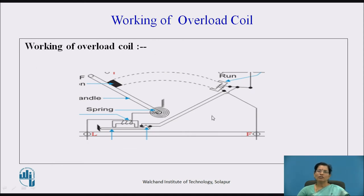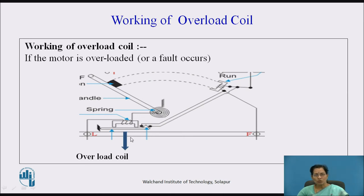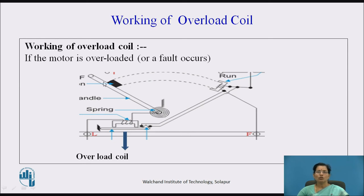Let us see about the working of the overload coil. If the motor is overloaded or a fault occurs, very large current flows through the motor and through the overload coil. Then the overload coil creates a magnetic field for that current. When the arm lifts up, due to the triangular portion, the no-volt coil demagnetizes and the handle goes to the off position. So the overload coil protects the motor from overload current.